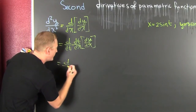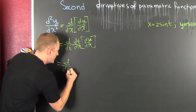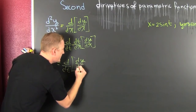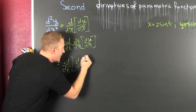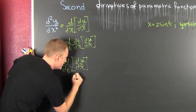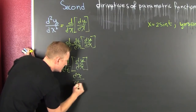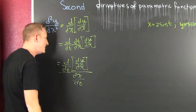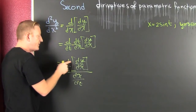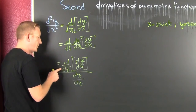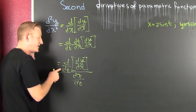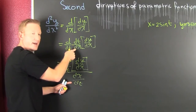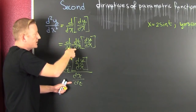Using a differential trick, we get the common form: d/dt of dy/dx, divided by dx/dt. This is the common form you see in most books — it's the derivative of the derivative with respect to t, and that's how we get that extra derivative of x with respect to t.